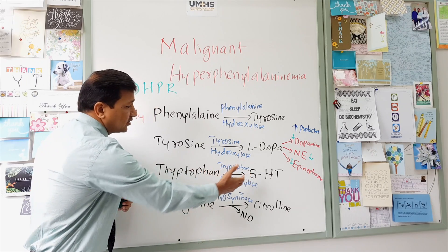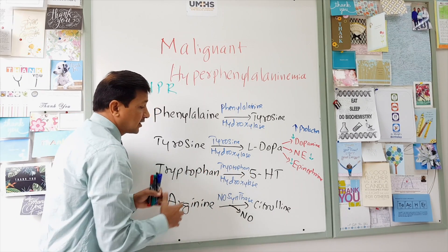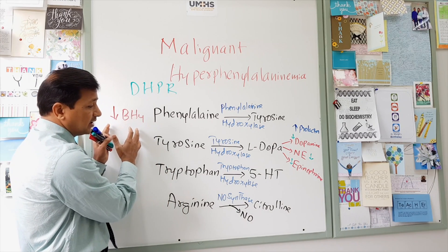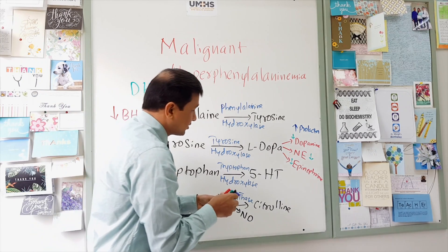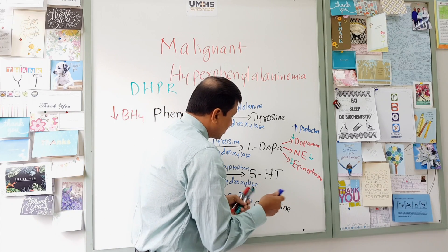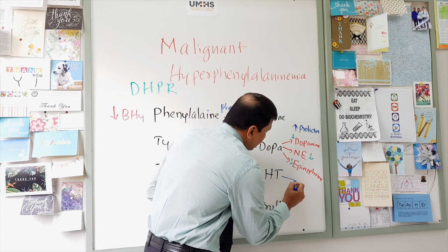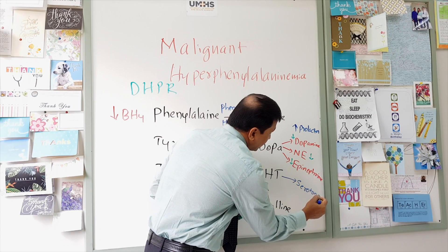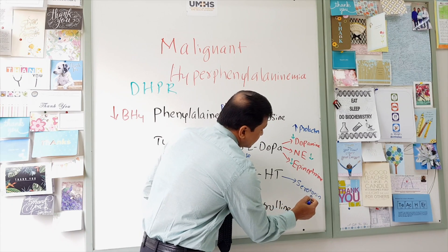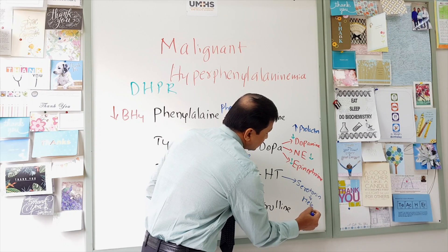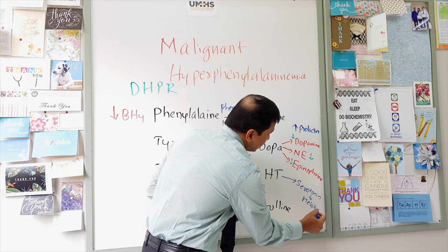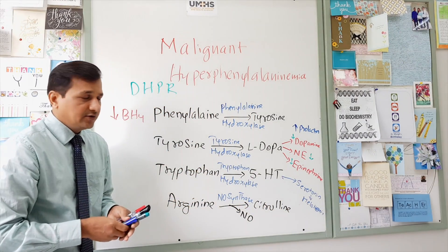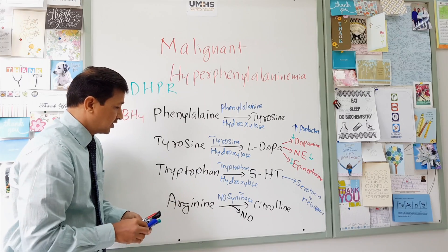Regarding the tryptophan pathway: tryptophan hydroxylase converts tryptophan into 5-hydroxytryptophan, but this also requires tetrahydrobiopterin. Because of decreased BH4 availability, 5-hydroxytryptophan is not produced adequately. Since serotonin is derived from 5-hydroxytryptophan, serotonin is decreased. And since melatonin is derived from serotonin, melatonin is also decreased.